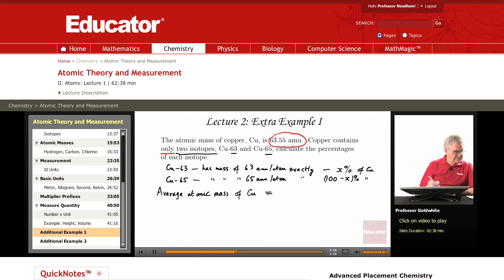First, we have x percent over 100 percent of copper-63, which has a mass of 63.00 amu, plus 100 minus x percent over 100 percent - that's the fraction that is copper-65 - with mass 65.00 amu. We know the sum of those two must be the average atomic mass, 63.55 amu.